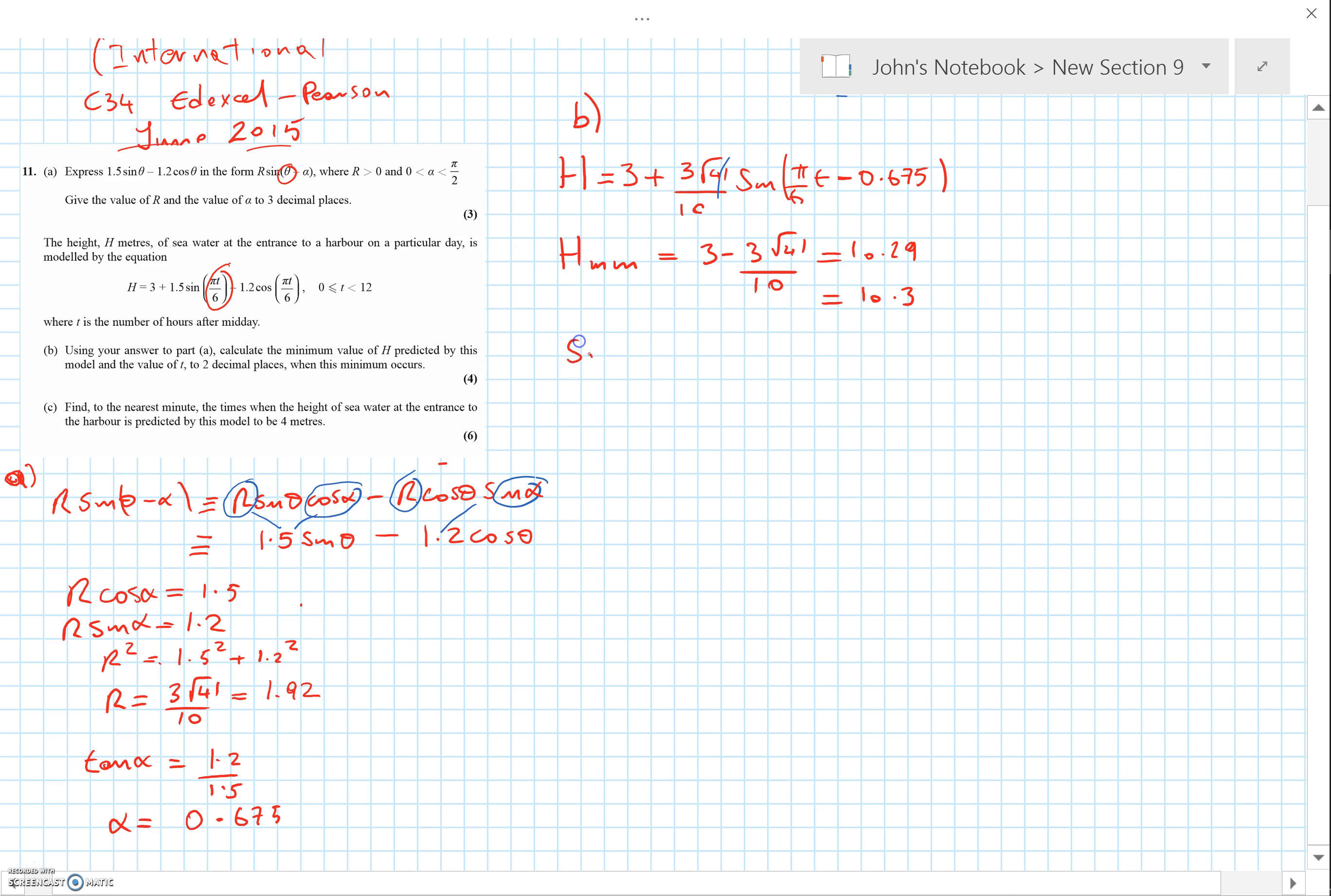Now, the time when this occurs is when sin(π/6 T - 0.675) equals minus one. You might use the calculator on this, but you don't really need to. The sine reaches its minimum value, its first time is 3π/2. That means we're solving π/6 T minus 0.675 equals 3π/2.